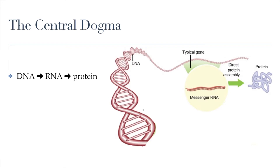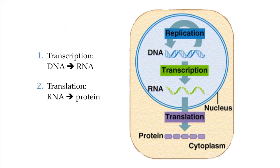We start with DNA, then we transfer the information of DNA into a molecule called RNA, and then we interpret the information of RNA to make proteins. When we go from DNA to RNA, that's called transcription, and transcription happens within the nucleus of the cell — that's where DNA is found and where RNA is made. The second part is called translation, which happens outside the nucleus in the cytoplasm, more specifically at the ribosomes, where the information in RNA is used to make proteins.